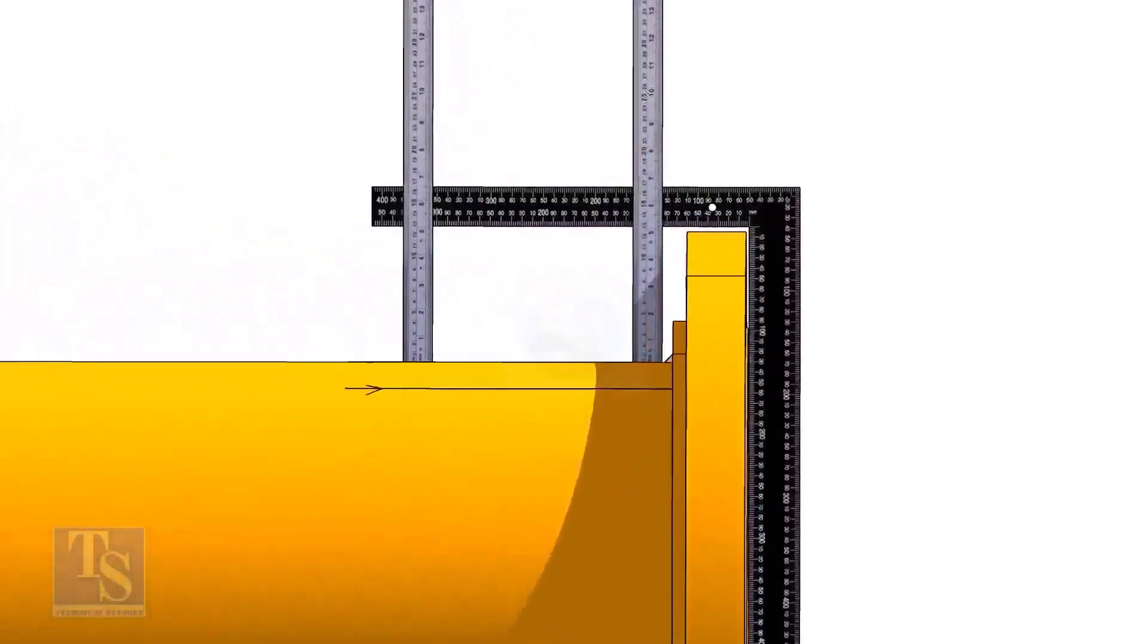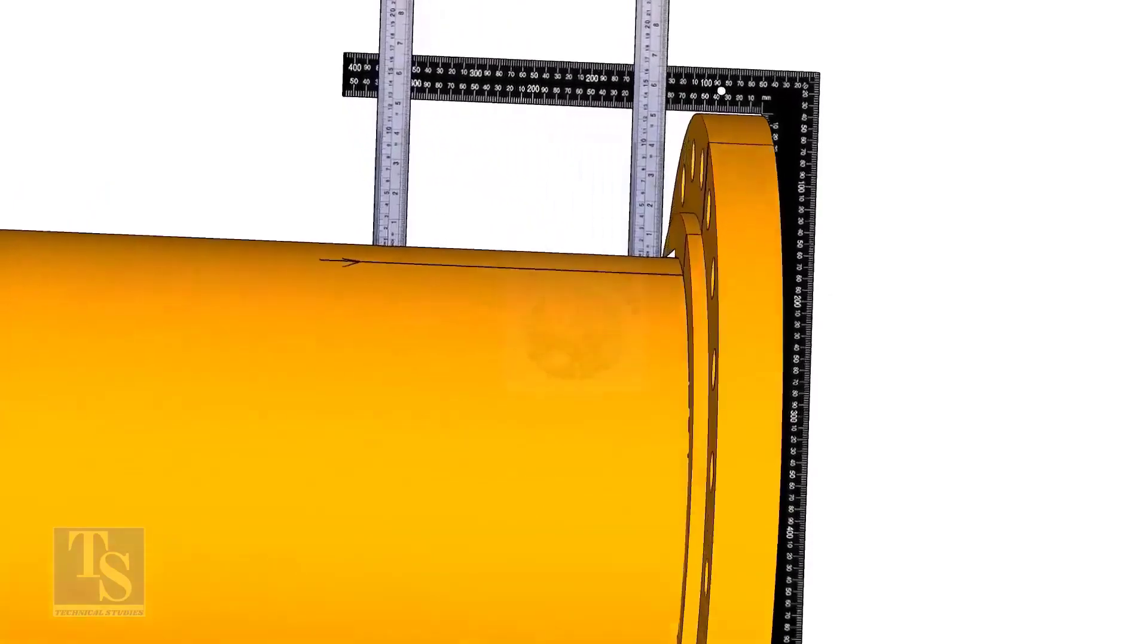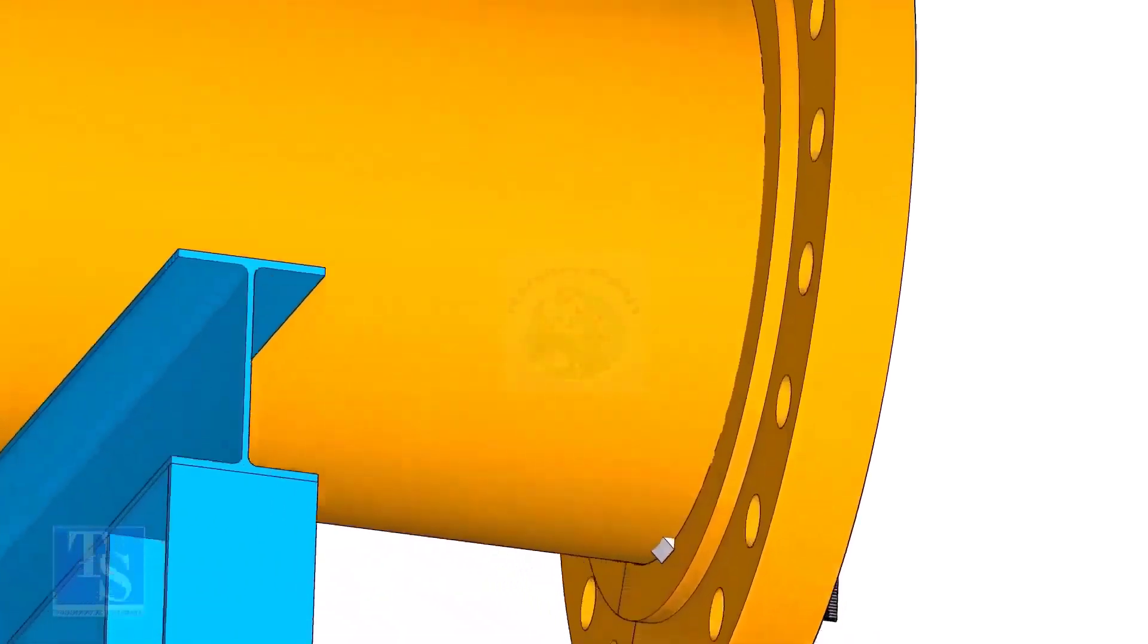Tack weld on the top of the pipe with the flange and check the squareness. If correct, tack weld at the bottom side also.